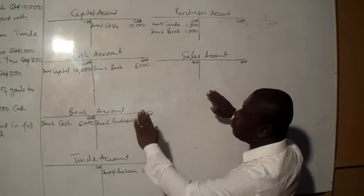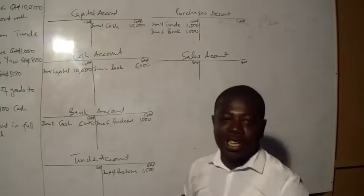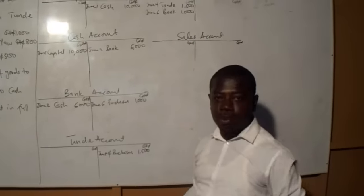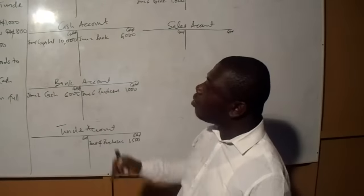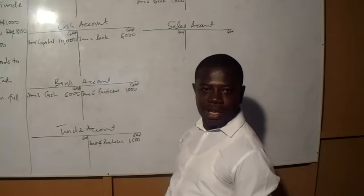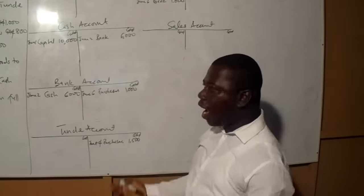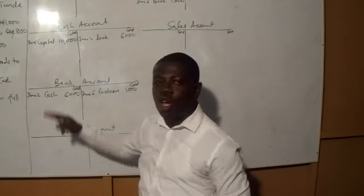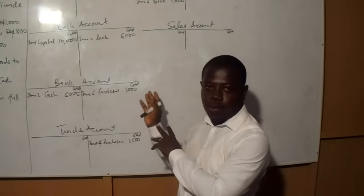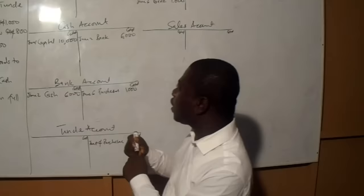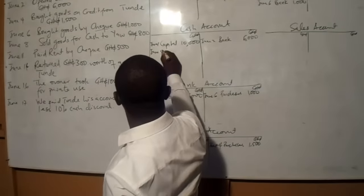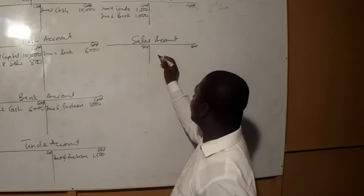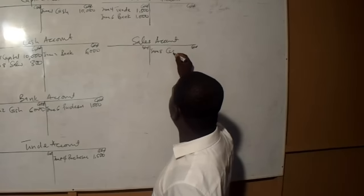The accounts are sales and cash. Cash account is a real account. Sales is income, so it is a nominal account. Is cash coming in or going out? Since we are selling for cash, cash is coming in, and the rule says debit what comes in — so we debit cash. Looking at sales, it is income and we credit all incomes and gains — so we credit sales. We debit cash account on June 8 in the name of sales, 800. We credit sales account on June 8 in the name of cash, 800.